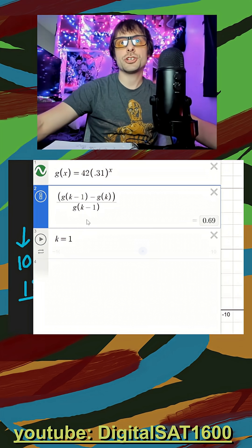And they just said k is a positive integer. I can just make it 1. There's my percentage there, 0.69 in decimal form.